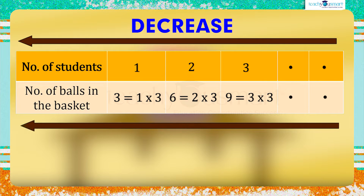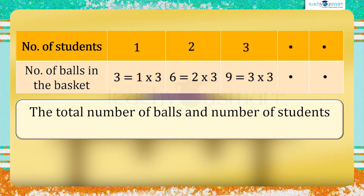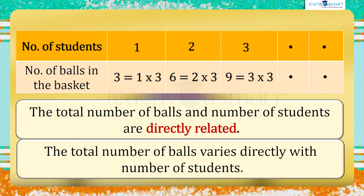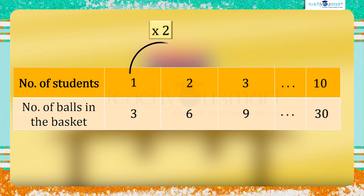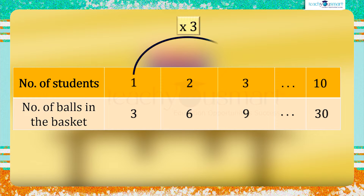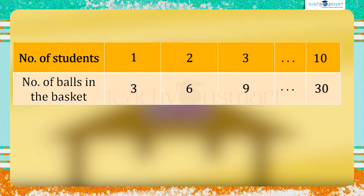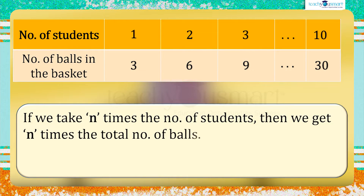In this situation we can say that the total number of balls and the number of students are directly related — that is, the total number of balls varies directly with the number of students. When the number of students is doubled, the total number of balls also doubles. When the number of students is tripled, the same thing happens with the total number of balls. If we take n times the number of students, then we get n times the total number of balls.